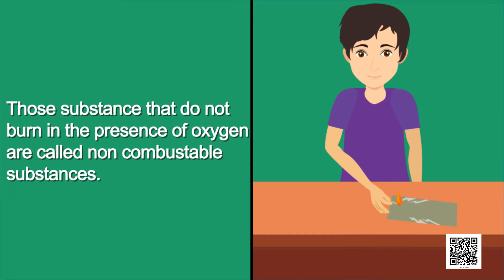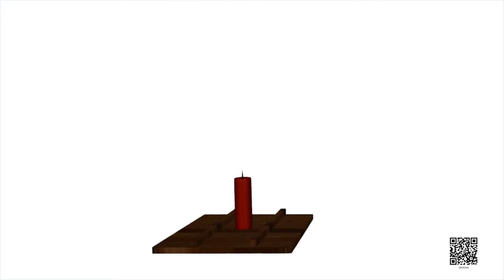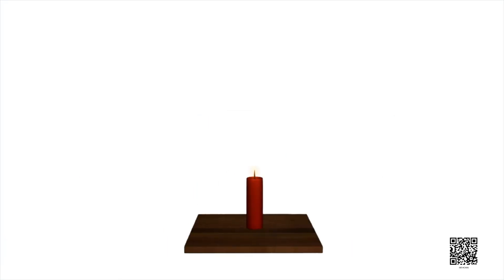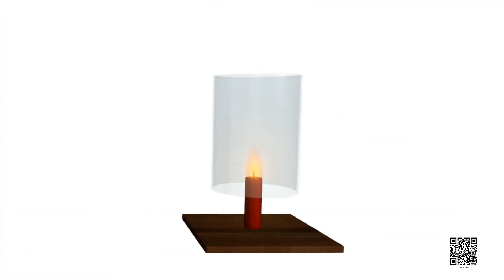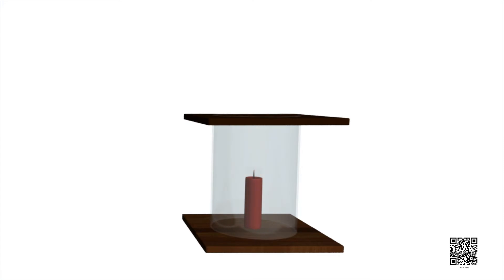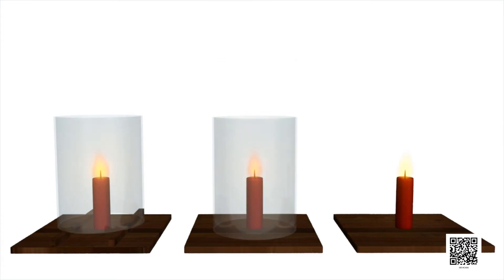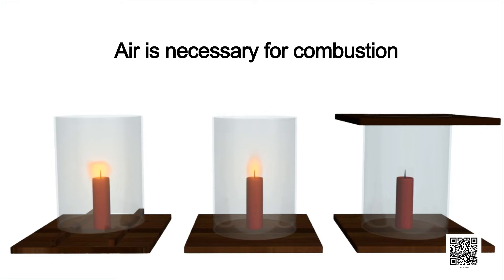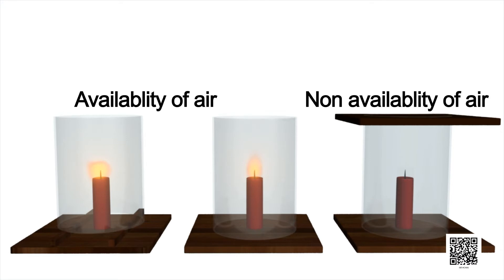Now let's discuss the conditions which are necessary for combustion. Fix a lighted candle on a table, place a glass chimney over the candle and rest it on a few wooden blocks so that air can enter the chimney. Observe what happens to the flame. Now remove the blocks and let the chimney rest on the table — does the flame flicker off or does it flicker and give smoke? Finally, put a glass plate over the chimney and observe the flame carefully.